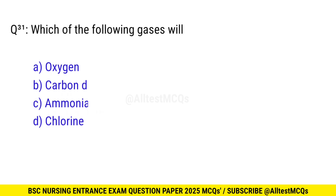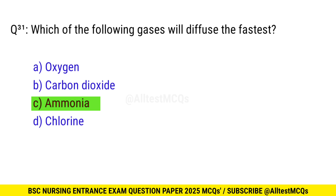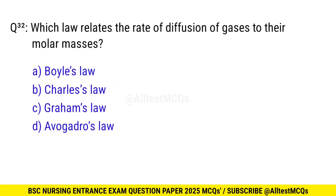Question No. 31: Which of the following gases will diffuse the fastest? The right option is C: Ammonia. Question No. 32: Which law relates the rate of diffusion of gases to their molar masses? The correct option is C: Graham's law.